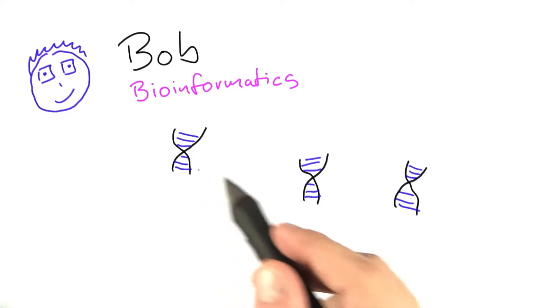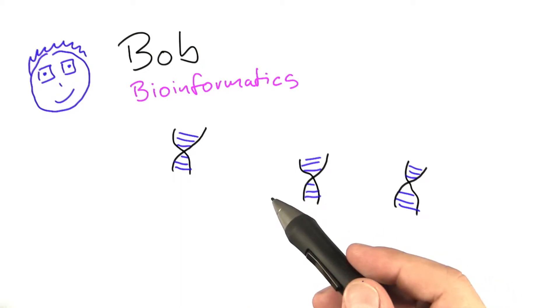So Bob is basically trying to figure out how genes work together, which groups of genes get activated, say, when a cell develops a disease or when it's infected, as opposed to the healthy cell.